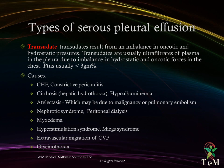Types of Pleural Effusion — Serous pleural effusion can be transudative or exudative. A transudate is usually an ultrafiltrate of plasma in the pleura due to imbalance in hydrostatic and oncotic forces. Fluid proteins are usually less than 3 grams per cent. Causes include congestive heart failure, constrictive pericarditis, cirrhosis, hypoalbuminemia, atelectasis, nephrotic syndrome, myxedema, hyperstimulation, Meigs' syndrome, and extravascular migration of CVP.